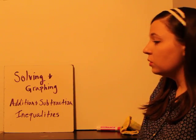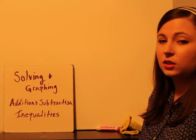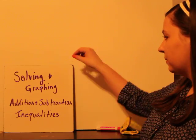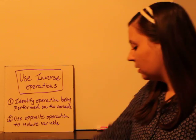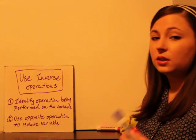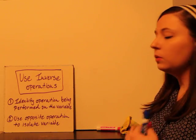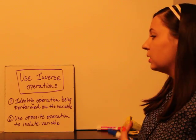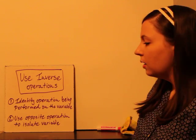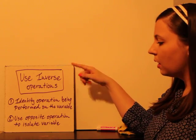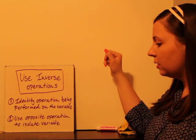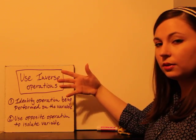Alright, we're going to learn how to solve and graph addition and subtraction inequalities. It's going to be the same as how we do equations, and we're going to use inverse operations. We're going to identify what operations being performed on our variable and then use the opposite operation to isolate our variable.